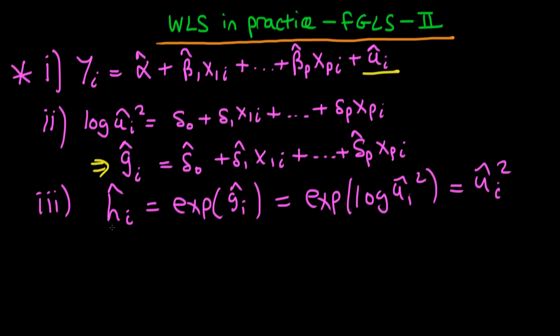So now we've got this ĥᵢ which is our estimated variance or our estimated conditional variance. How do we then use that to transform our system?